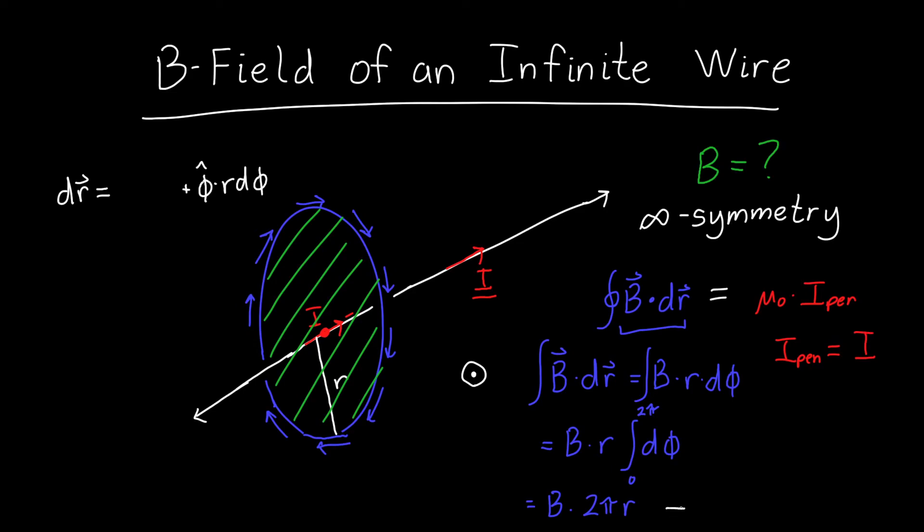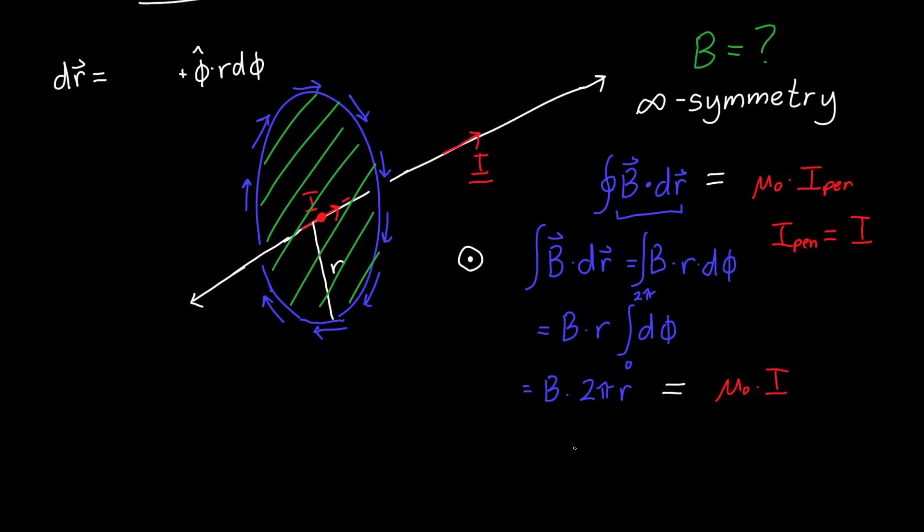So finally, we can set these two equal to each other. B times 2 pi r is equal to mu naught times I. And we can solve for B.